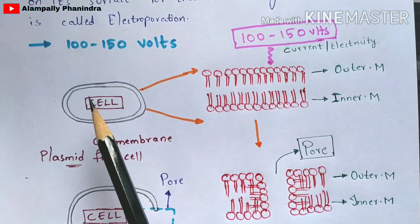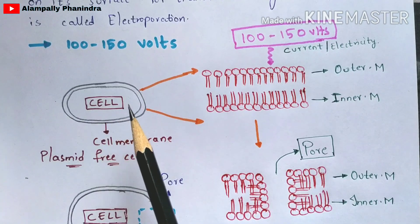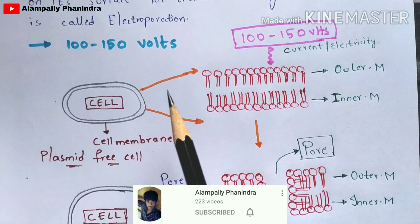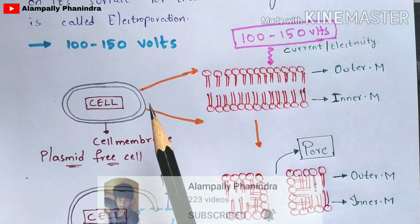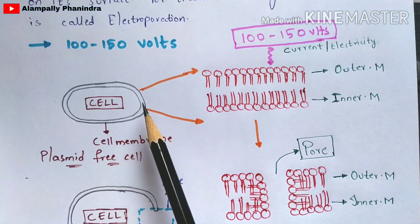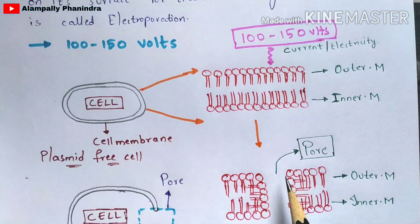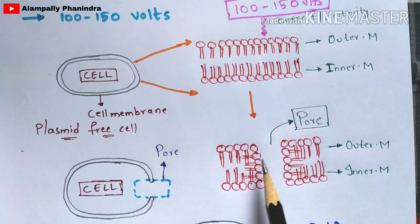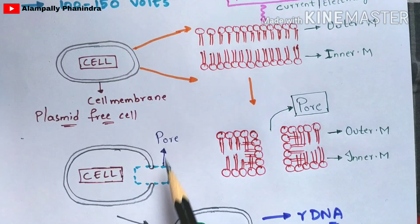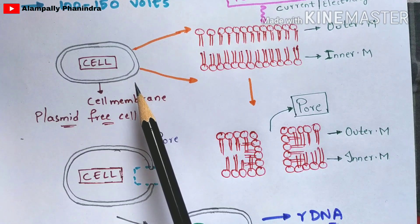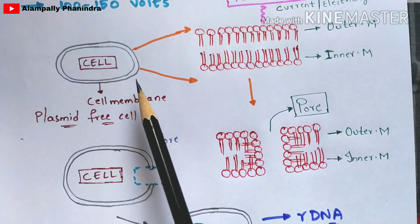First, the cell will get vibrated. You are not going to apply electricity continuously — you give just a small jerk. Once you give that small jerk, the cell gets totally vibrated and forms a small pore. There will be a small opening on the cell membrane, as shown here. This is your first step.